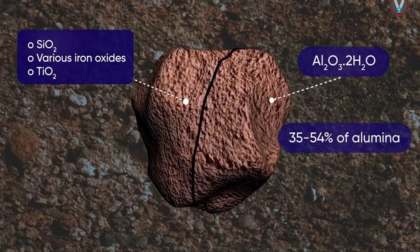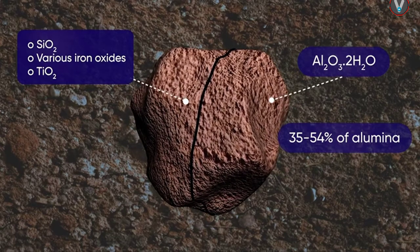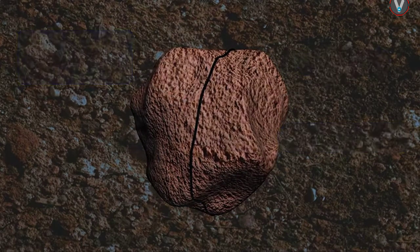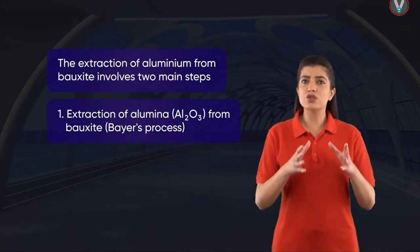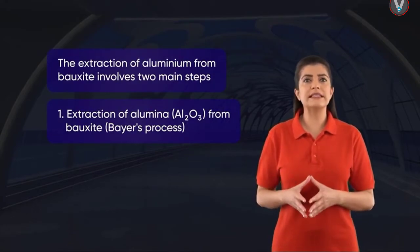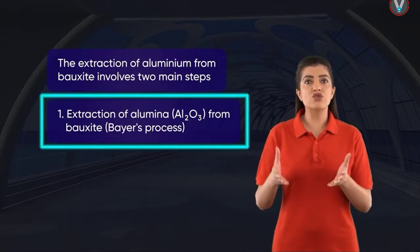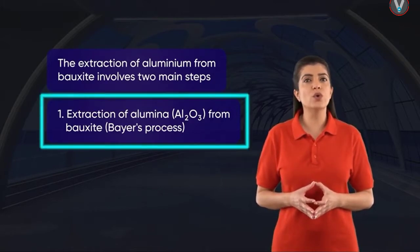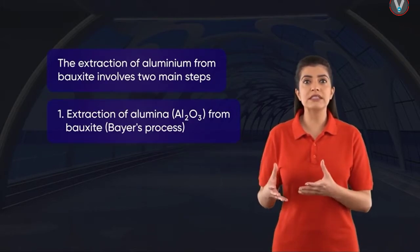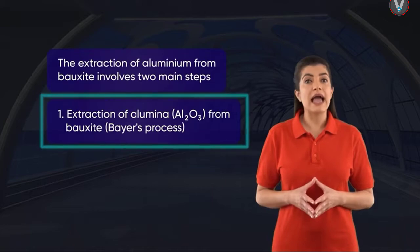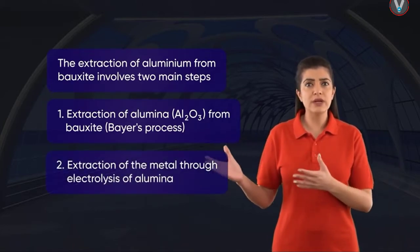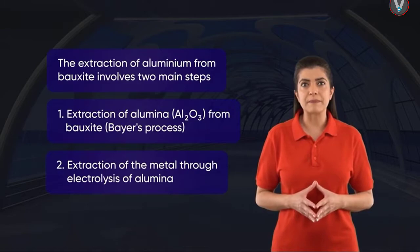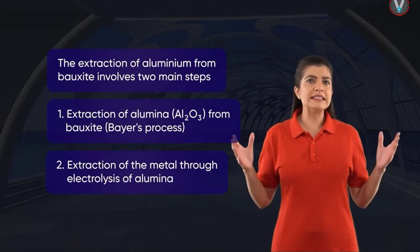The extraction of aluminium from bauxite involves two main steps: one, extraction of aluminium oxide (Al₂O₃) from bauxite via the Bayer process, and two, extraction of the metal through electrolysis of alumina. Let us discuss the Bayer process in detail.